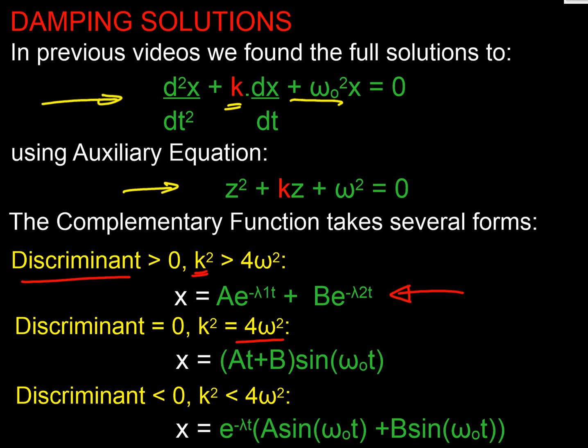If my discriminant is 0, K² equals my 4ω², I start having an oscillation. But I have that special term out the front, the AT plus B, because I've got a repeated root.